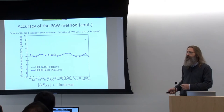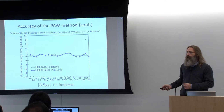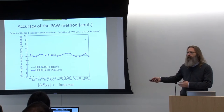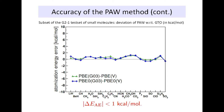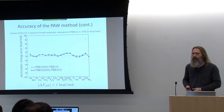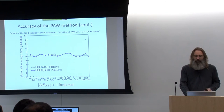One kcal per mole is what is commonly called chemical accuracy — any method that reaches this is the winner with respect to experiment, because that is the accuracy achievable in experiment. Of course, this is agreement of two DFT calculations, not close to experiment, but they agree amongst each other at least.